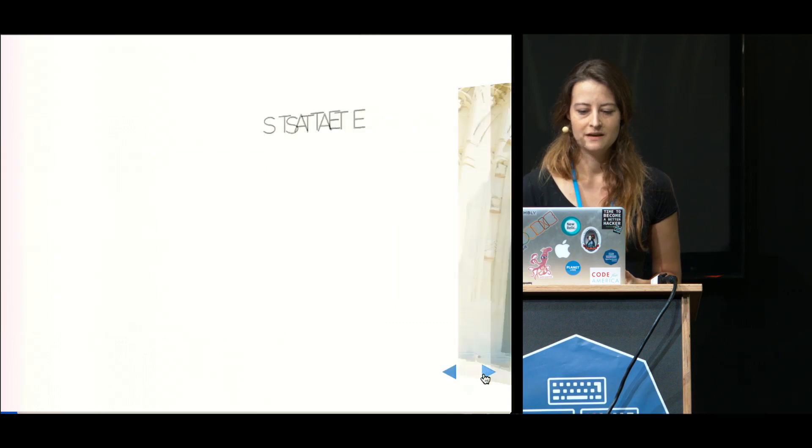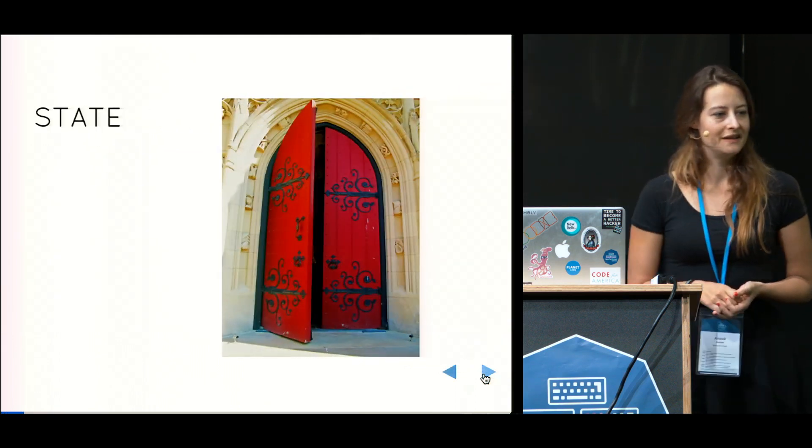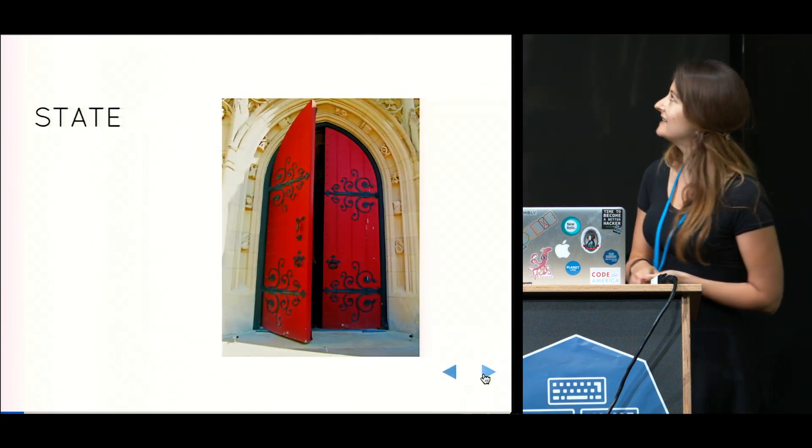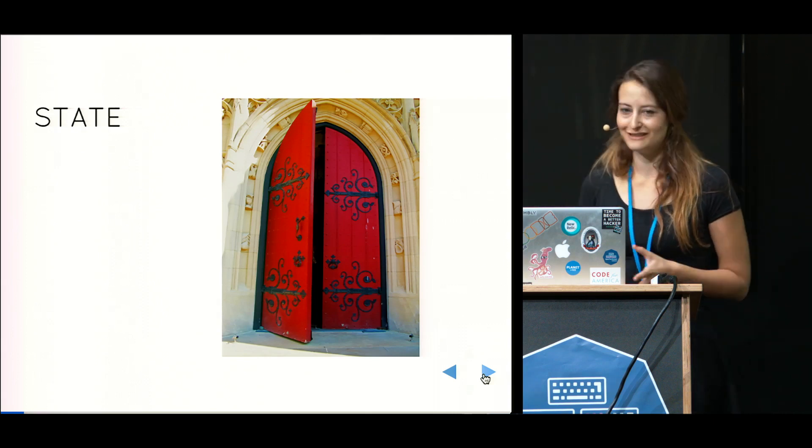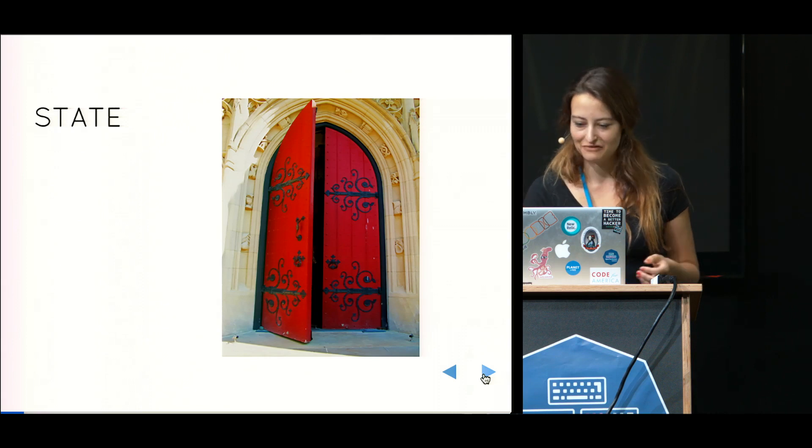What is state? Take this door, for example. This door can have one of two states. It can be open, like it is right now, or it can be closed. Those are the states of the door. That's pretty easy, right?